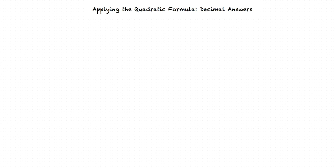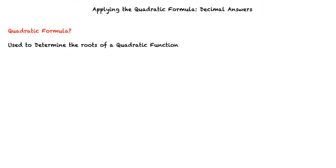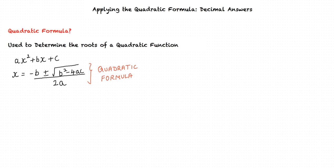This video will cover the topic: Applying the Quadratic Formula — Decimal Answers. A quadratic formula is one method to determine the roots of a quadratic function. Given a quadratic function of the form ax² plus bx plus c, the quadratic formula can be applied to determine the roots: x equals negative b plus or minus square root of b squared minus 4ac, whole divided by 2a.